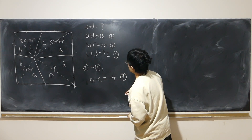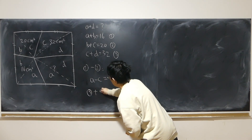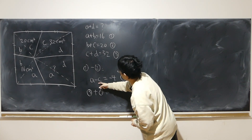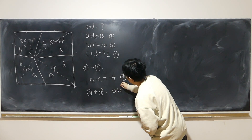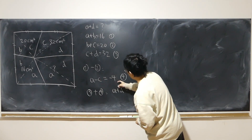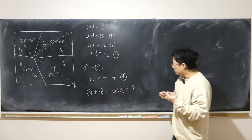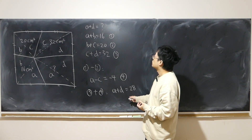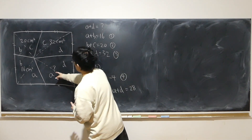Now let's use equation 3 plus equation 4. Immediately C and negative C cancel, so we get A plus D. In this case, 32 minus 4 equals 28. So we're lucky enough that even without solving for individual A, B, C, and D, we still have the answer for A plus D. So immediately the area is 28 square centimeters.